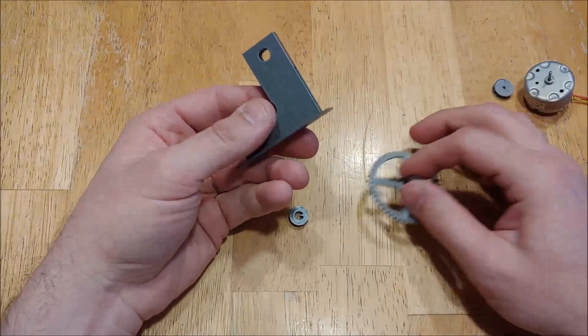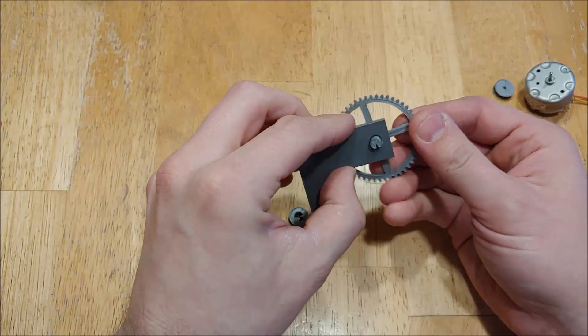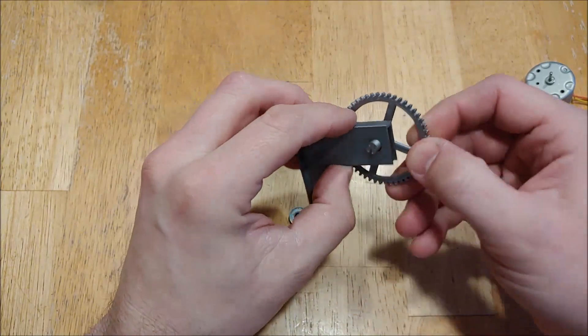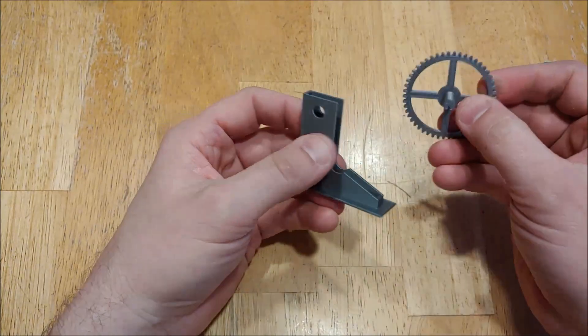First thing that you want to do is check to make sure that your piece is printed properly, like so. Now it is going to be a little bit sloppy in there because having to print this vertically, the holes aren't always exactly right.